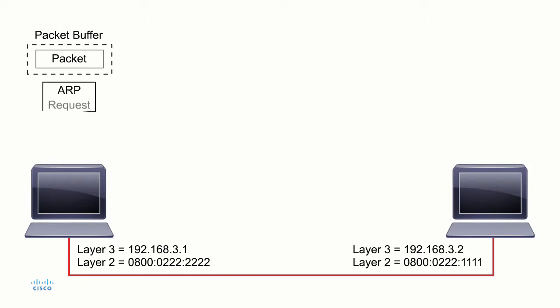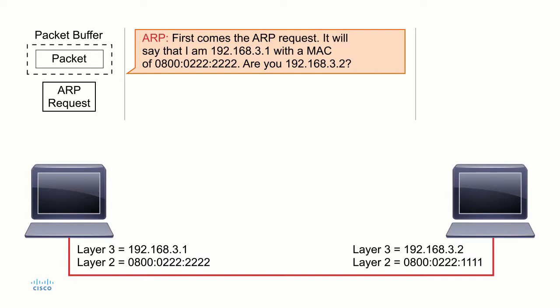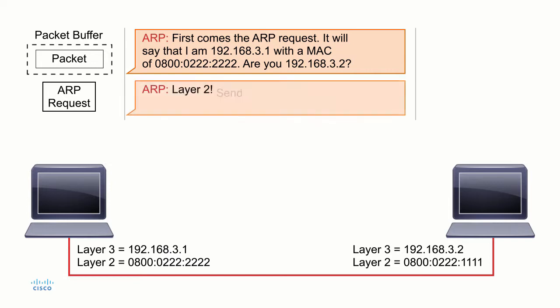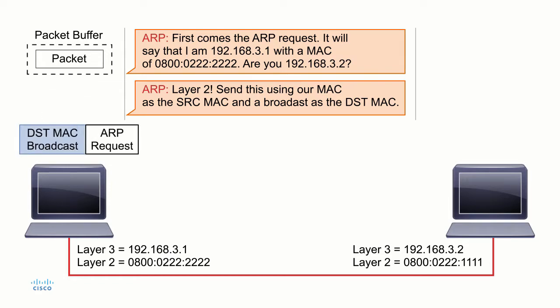ARP creates an ARP request that says: hello, I am 192.168.3.1 and my MAC address is 0800.0222.2222 — are you 192.168.3.2? This is a broadcast, so it's sent out to everybody. ARP tells layer two to send this ARP message using our MAC address as the source and all Fs as the destination — that broadcast address. So the destination is the broadcast address, the source is ourselves, and this is an ARP request sent out onto the wire.